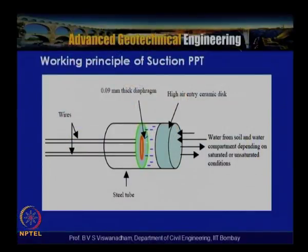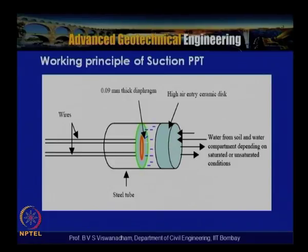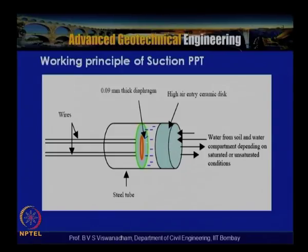For partially saturated soils, suction pore water pressure must be measured. In this transducer the diaphragm is filled with water and a ceramic disc is placed in position. Water is drawn from the surrounding unsaturated soil into the water compartment, causing deflection and a change in pressure. These transducers can measure suction pressures from −100 to −200 kPa.